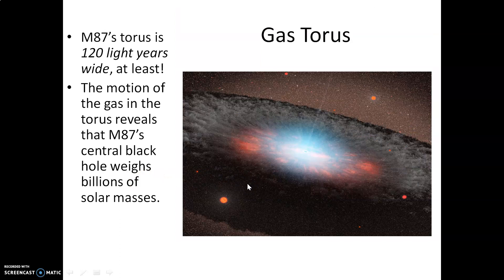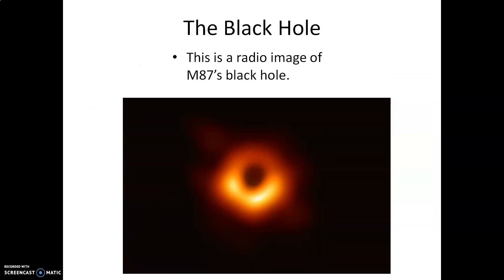Here's an artist's rendition of the gas torus surrounding the supermassive black hole of M87. M87's gas torus — this donut of material — is in the neighborhood of 120 light years wide, giving an idea of how massive the black hole itself is. Its mass is in the neighborhood of billions of solar masses, several orders of magnitude larger than the central supermassive black hole of the Milky Way. Here is the now-famous radio image of M87's black hole, showing the event horizon, which encompasses a volume larger than the solar system.